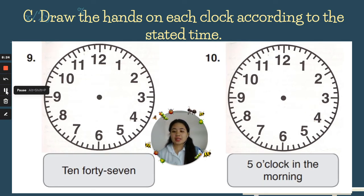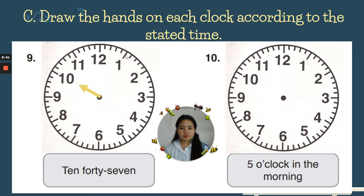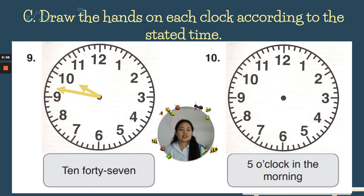Number nine: the time is 10:47. Ten is the hour, so that is the small hand. For forty-seven minutes — five, ten, fifteen, twenty, twenty-five, thirty, thirty-five, forty, forty-five, forty-six, forty-seven. So that is the long hand. The clock says ten forty-seven.